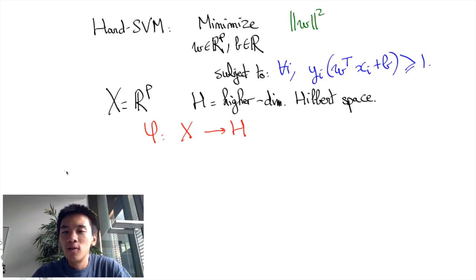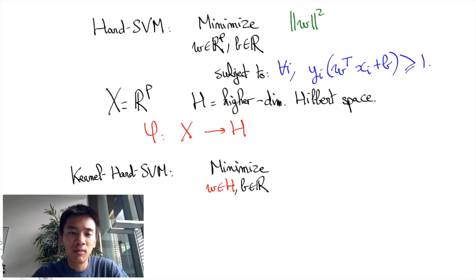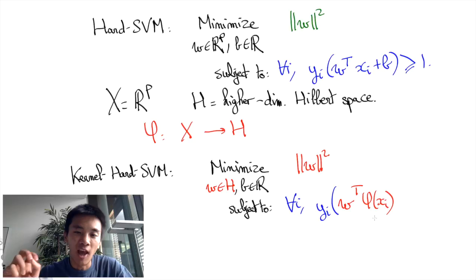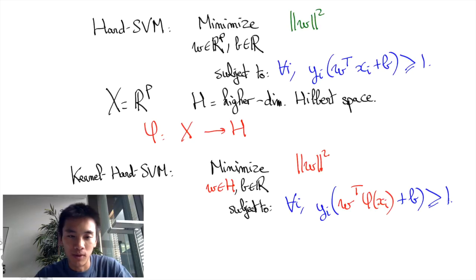Hence the new kernel hard SVM optimization program: minimize for W in H this time and B in R, W transpose W, which is the same as the norm of W squared, subject to YI times W transpose phi of XI, so this is the embedding of XI into the Hilbert space, plus B, and this must be greater or equal to 1.